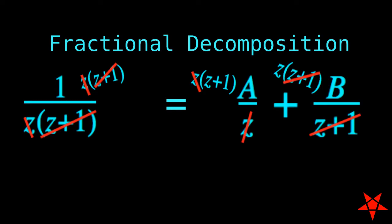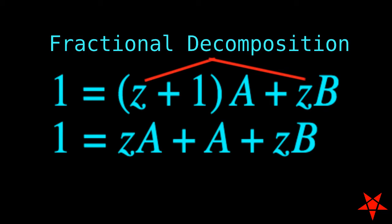What we then do is notice that the right-hand side can be separated into components that are and are not multiples of z.